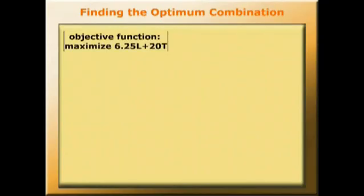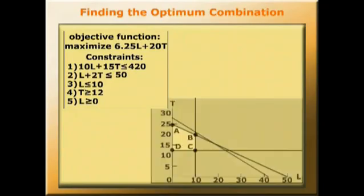We can now proceed to decide which is the optimum combination of tomatoes and lettuces for our grower. So far we've established the objective function, we've worked out the constraints and we've graphed them.